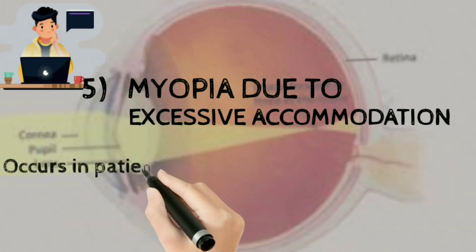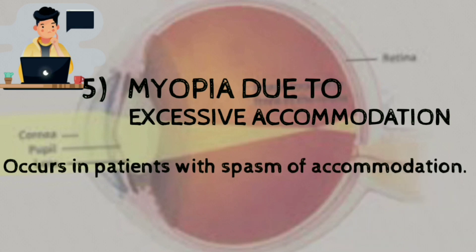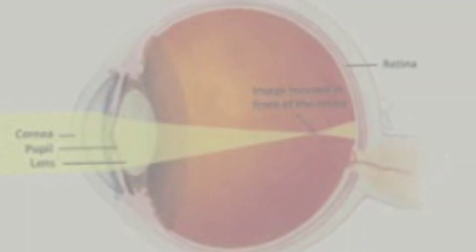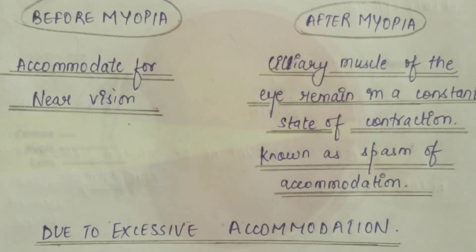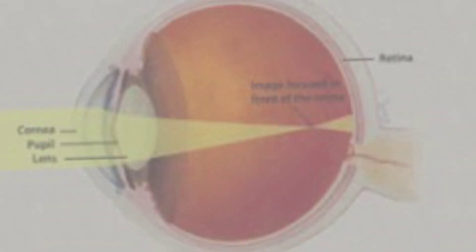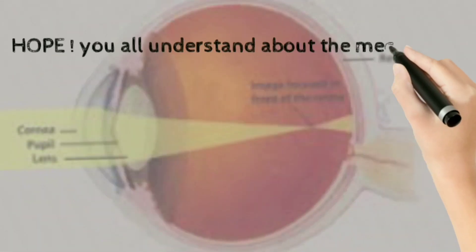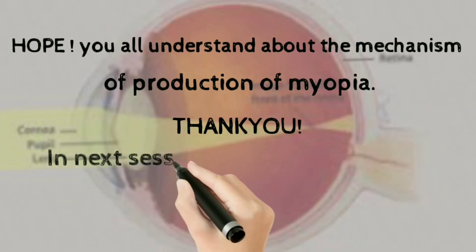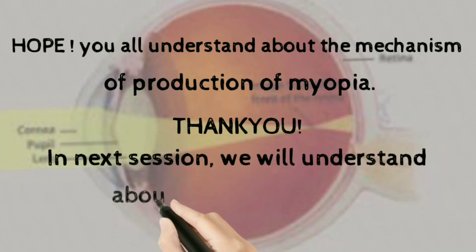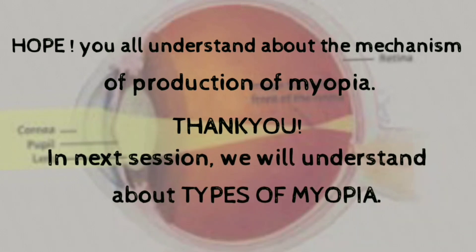The fifth type is myopia due to excessive accommodation. As we know, accommodation is at rest in myopia. In the normal eye there is accommodation for near vision, but in myopia the ciliary muscles of the eye remain contracted. I hope you all understand the mechanism of production of myopia. We will cover types of myopia in the next session. Thank you.